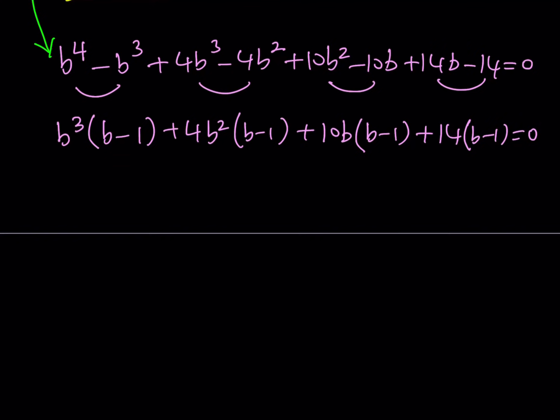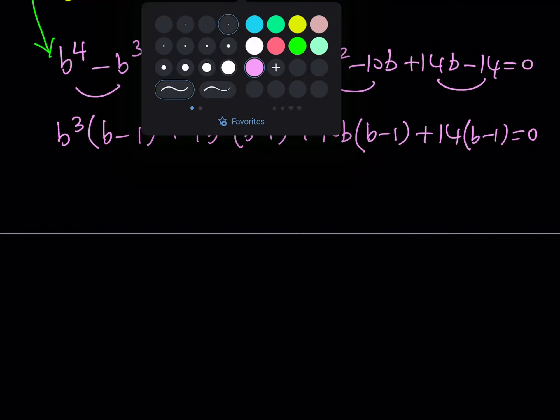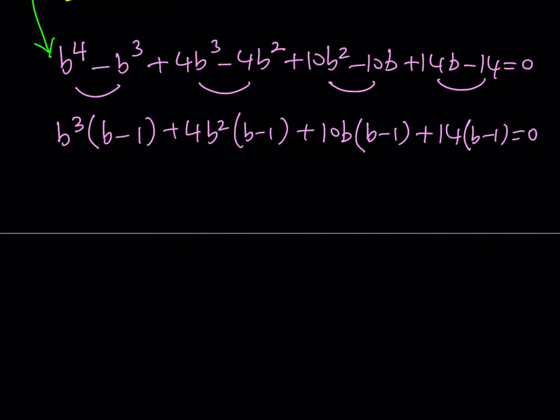Notice that B minus 1 popped up everywhere. That was expected because we knew that B minus 1 is a factor because B equals 1 is a solution. All right. So, let's go ahead and factor out B minus 1 so that we can get our cubic. And, our cubic is going to look like this. It's B cubed plus 4B squared plus 10B plus 14 is equal to 0.